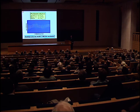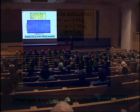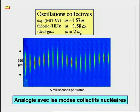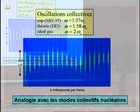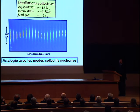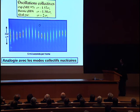Ce transparent montre l'oscillation collective d'un condensat. On voit très bien les changements de la forme du condensat au cours du temps dans ces images prises à différents intervalles de temps consécutifs. L'accord entre la théorie et l'expérience est remarquable. Il est aussi intéressant de souligner l'analogie entre les oscillations du condensat et les modes collectifs des noyaux atomiques.